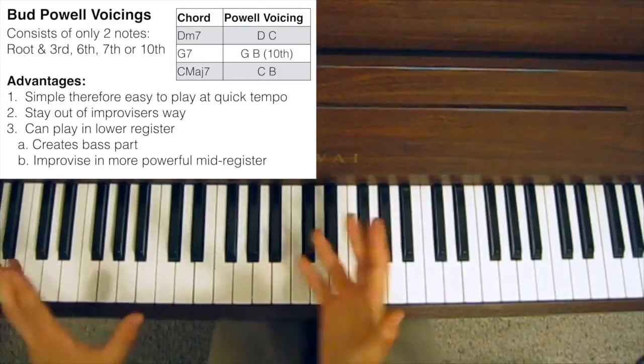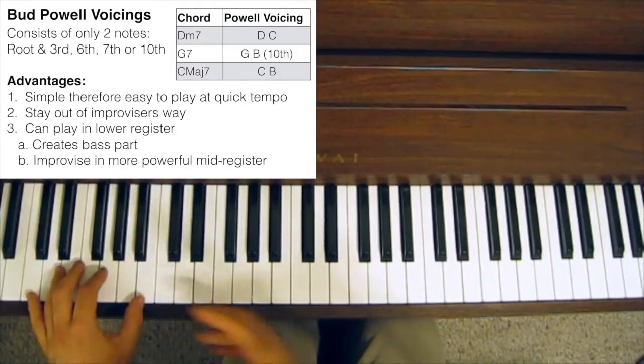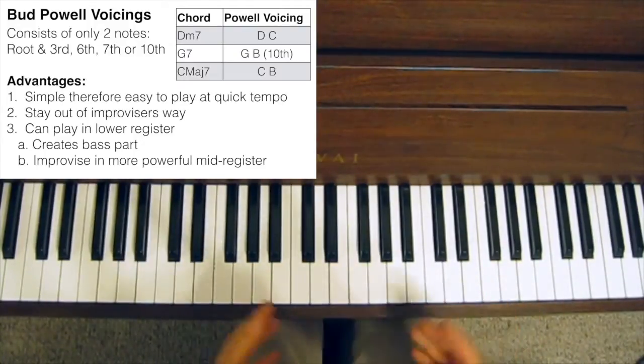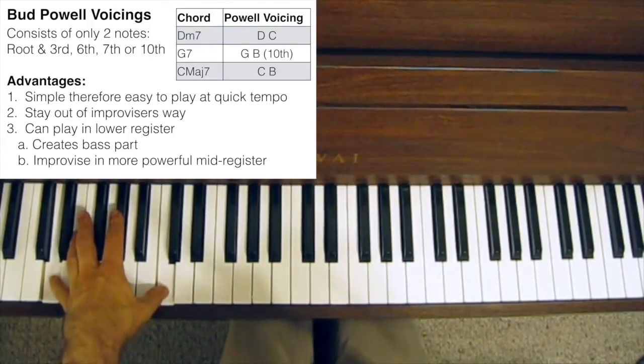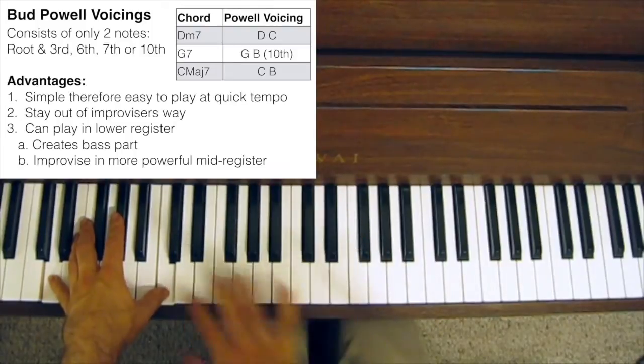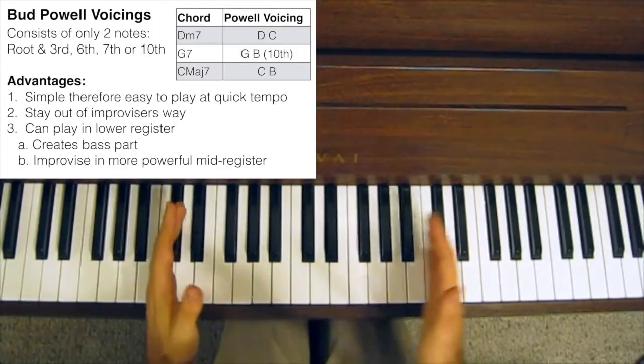And so, by playing this Bud Powell-style chord voicing, you're introducing a bass part, and so you're giving the whole song a bit more form, and it sounds a bit more completed and rounded. And the second thing that playing lower down means is that you can use this area to improvise, and this is quite a strong, loud, powerful part of the piano, sort of the mid-range.